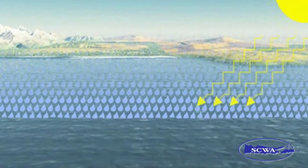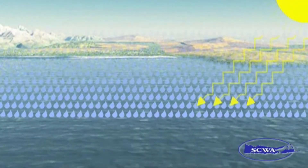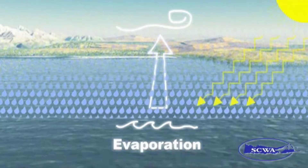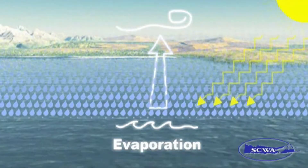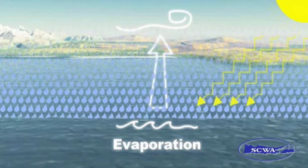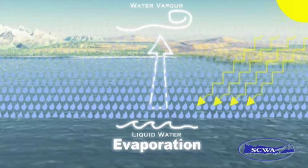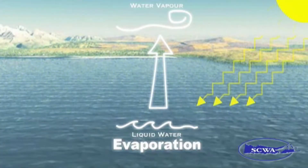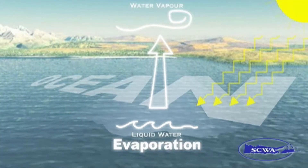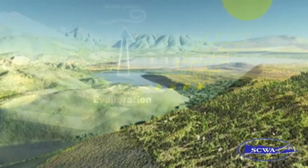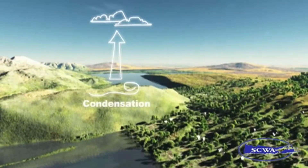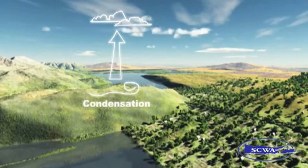Heat from the sun causes water, mainly from oceans, to warm and eventually evaporate, or in other words, change from water to a vapor. The water vapor rises in the air and eventually reaches a level in the atmosphere where it is cool enough for the vapor to change back to a liquid. This is called condensation.